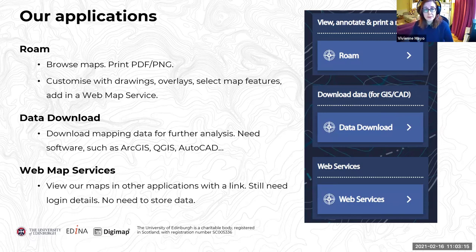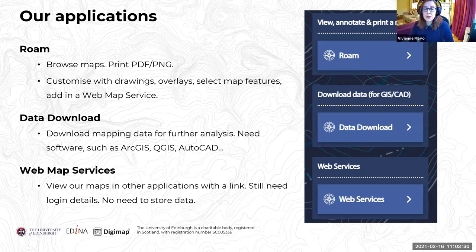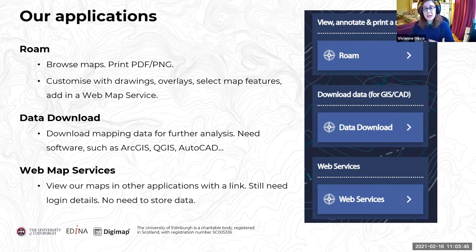Our data download facility allows you to actually download mapping data for further analysis. If you're going to do that, you will typically need some additional software. Some of the more popular geographic information software are ArcGIS and QGIS. We have a lot of users who use AutoCAD to create 3D models for architecture and site plans. Roam is for browsing and the data download application is for downloading data for further analysis.